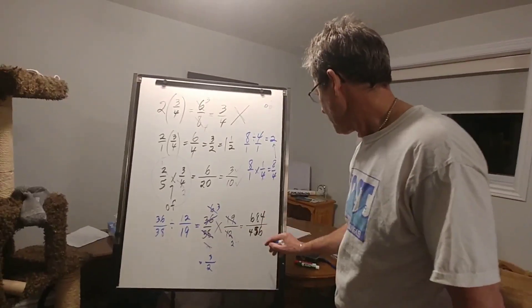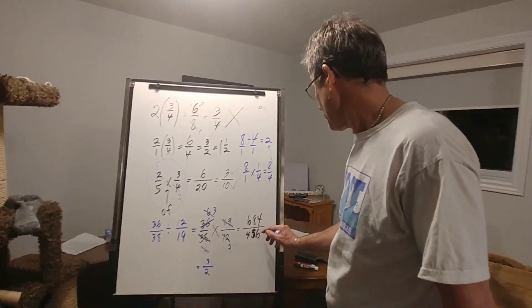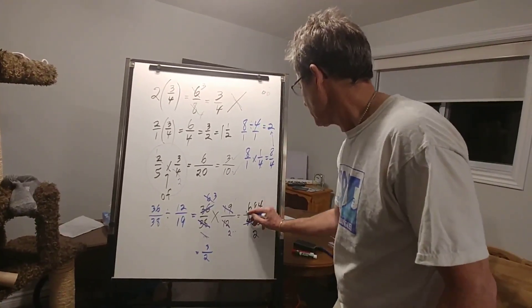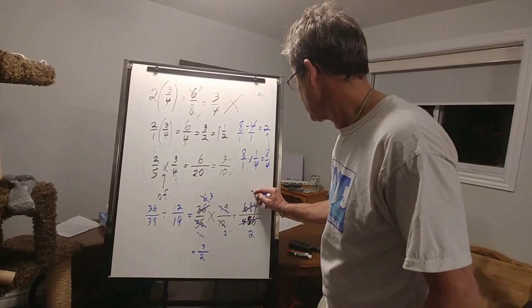If I divide top and bottom here by 228, divided by 228, that's 2. If I divide that by 228, sure enough, that's 3.